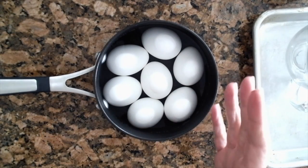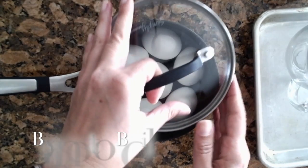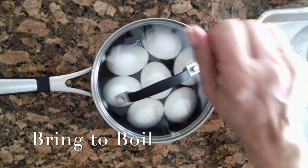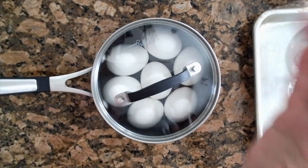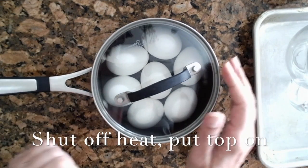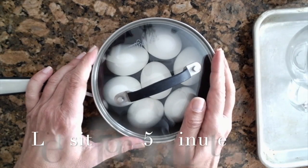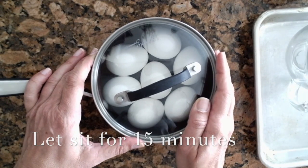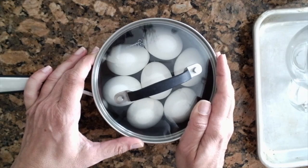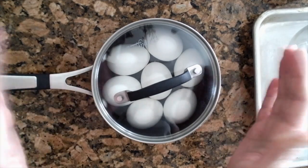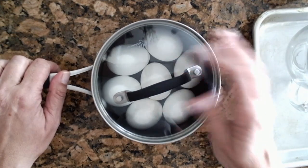Once the water boils, put the top on, shut off the heat, and leave it on the burner for 15 minutes. It has to sit in the water for 15 minutes, but you don't want it to continue boiling because then they'll bang around and crack the eggs.